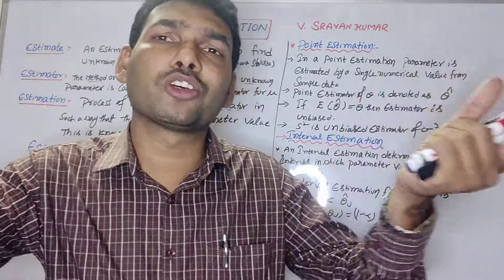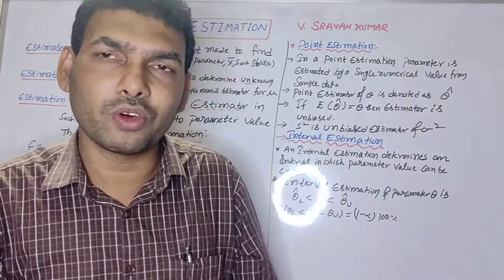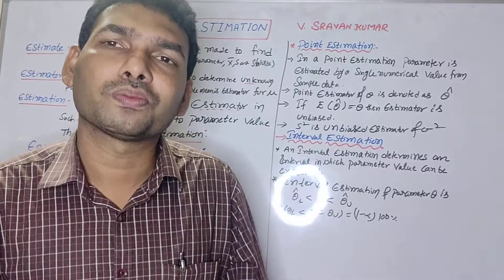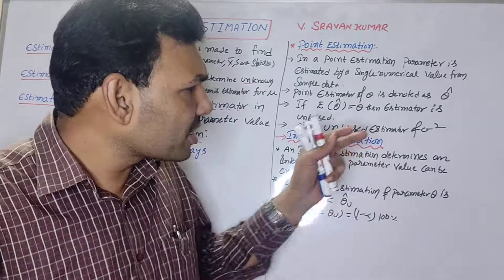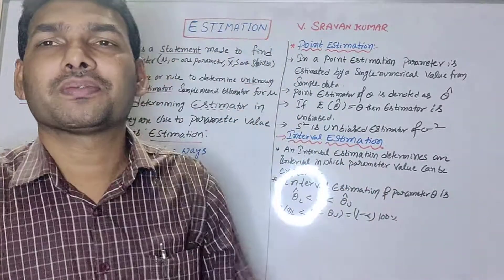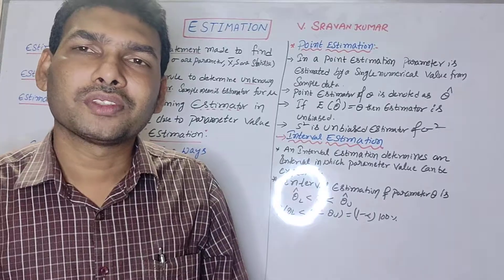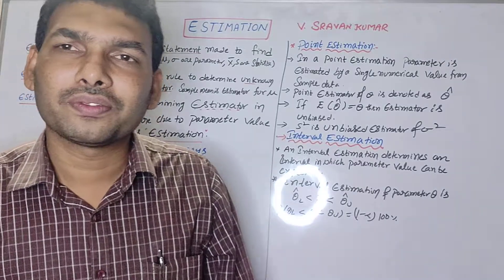The confidence interval for the population mean mu is: x-bar plus or minus z-alpha/2 into sigma over root n. This is the estimation — a continuation of hypothesis testing. Are you clear?